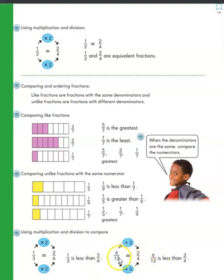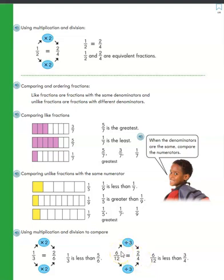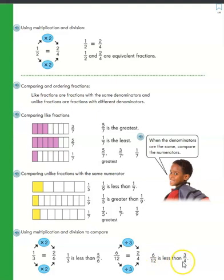In this second example, we compare six-twelfths and three-fourths. We divide 12 by 3 to get the denominator 4, and do the same to the numerator: six divided by 3 is 2. So six-twelfths is the same as two-fourths, which tells us six-twelfths is less than three-fourths, because two pieces out of four is smaller than three pieces out of four.